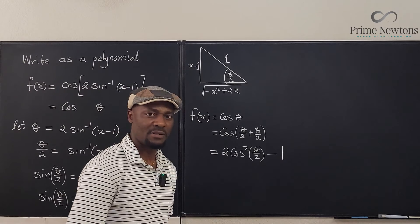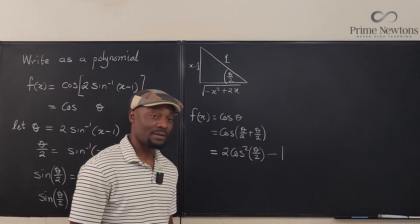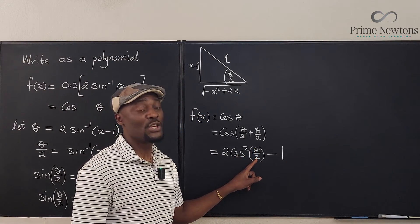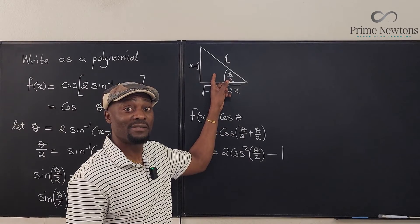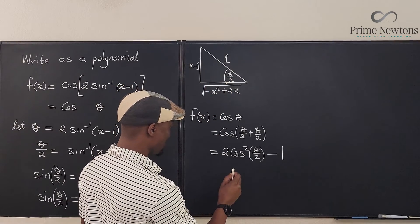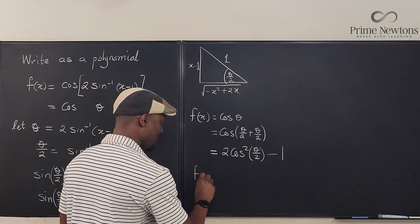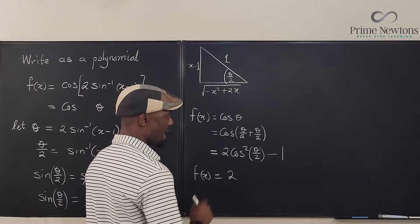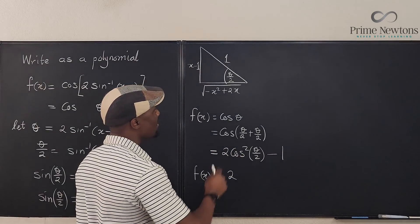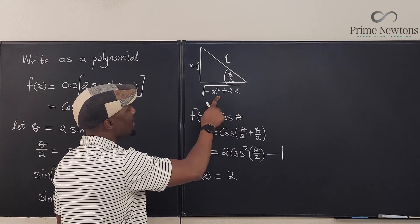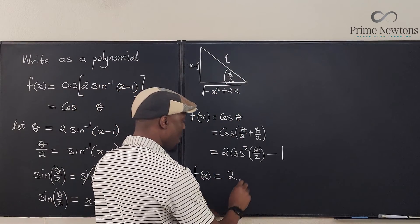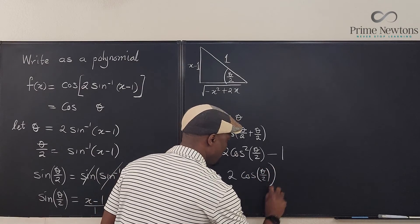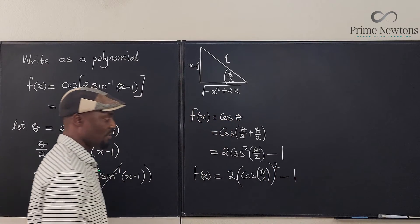All I need is to find what cosine of theta over 2 is, which I can get from this triangle. So our F of X will be equal to 2 times cosine squared(theta over 2) minus 1. Cosine of theta over 2 is adjacent over hypotenuse. The adjacent side is the square root of negative X squared plus 2X, and the hypotenuse is 1. So cosine(theta over 2) equals the square root of negative X squared plus 2X.